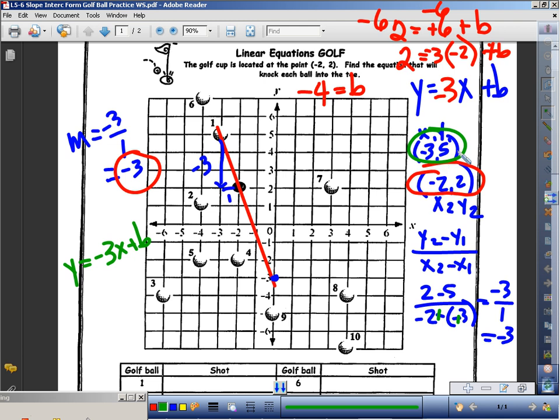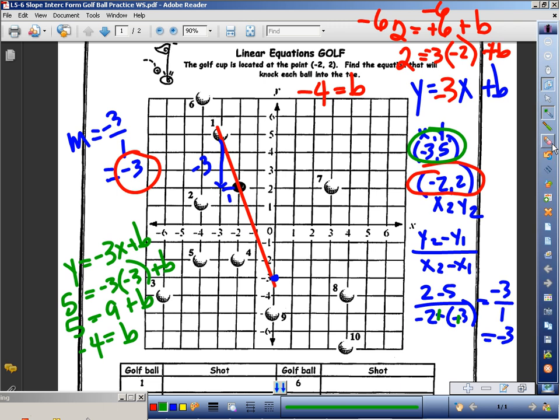My x is negative three plus b. So five equals negative three times negative three is positive nine plus b. If I subtract nine from both sides, I get b equals negative four. So it definitely looks, in fact, that my y-intercept is going to be negative four.